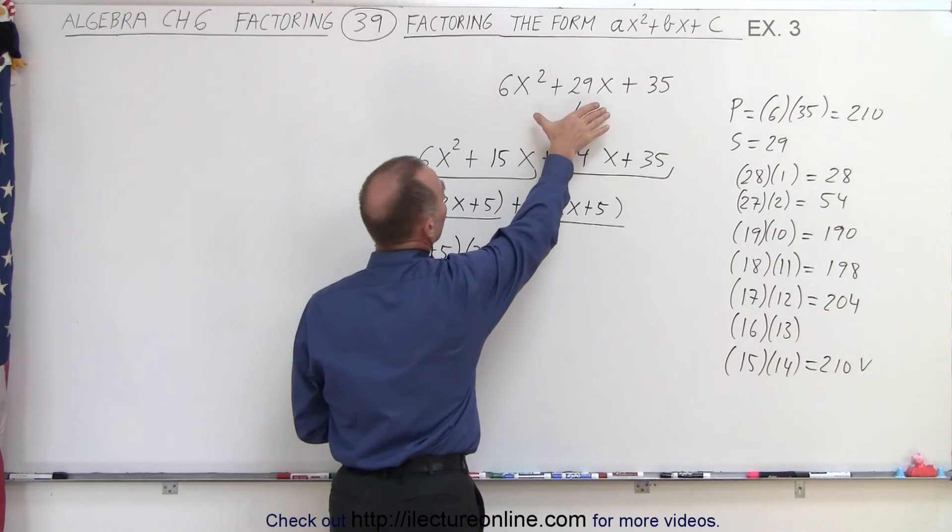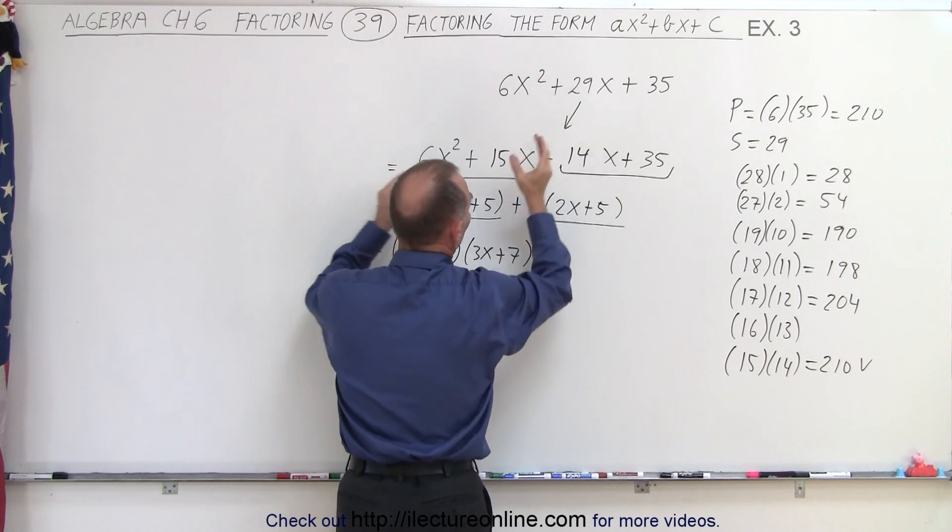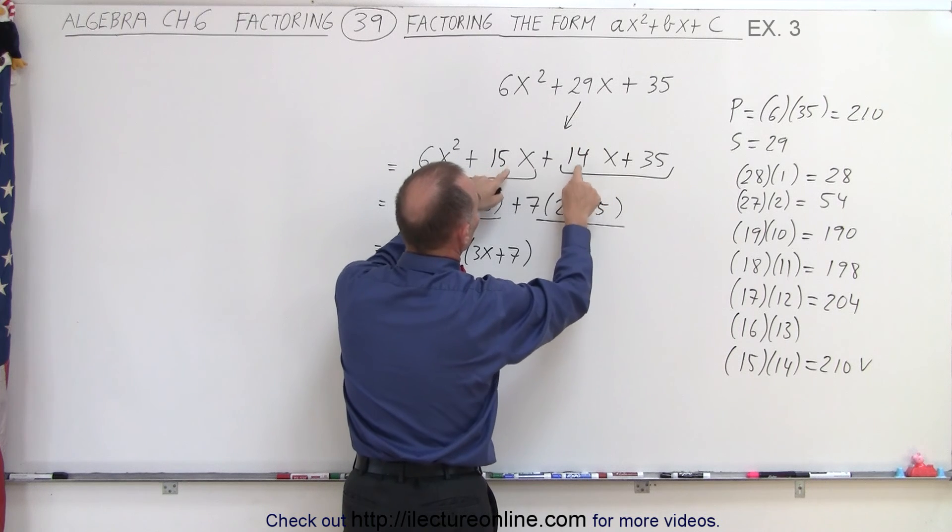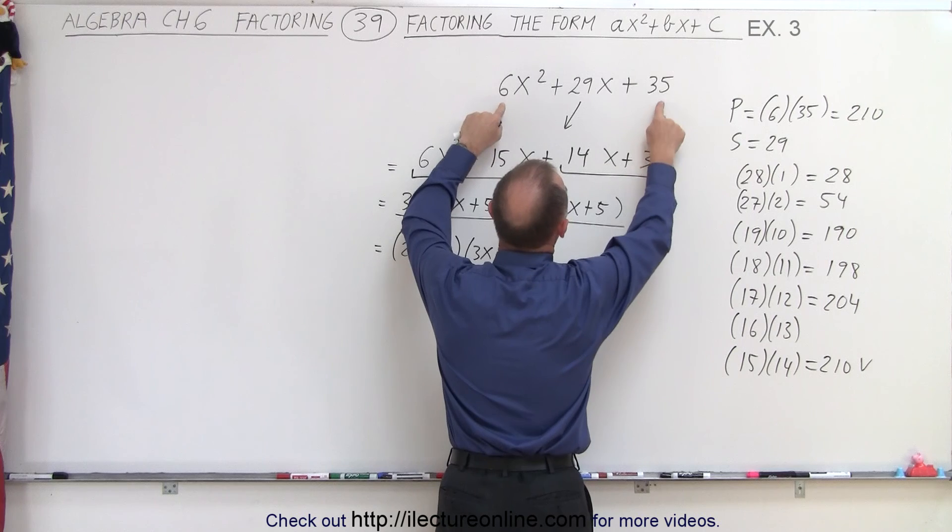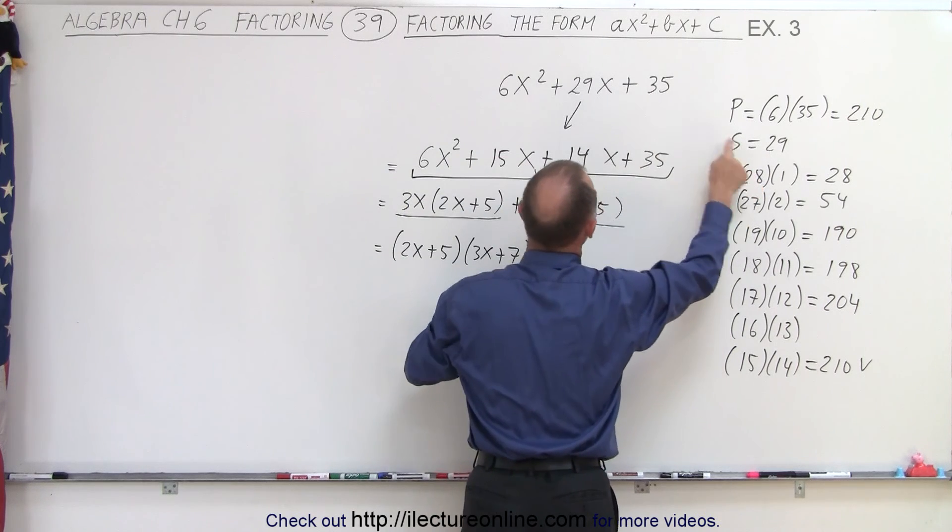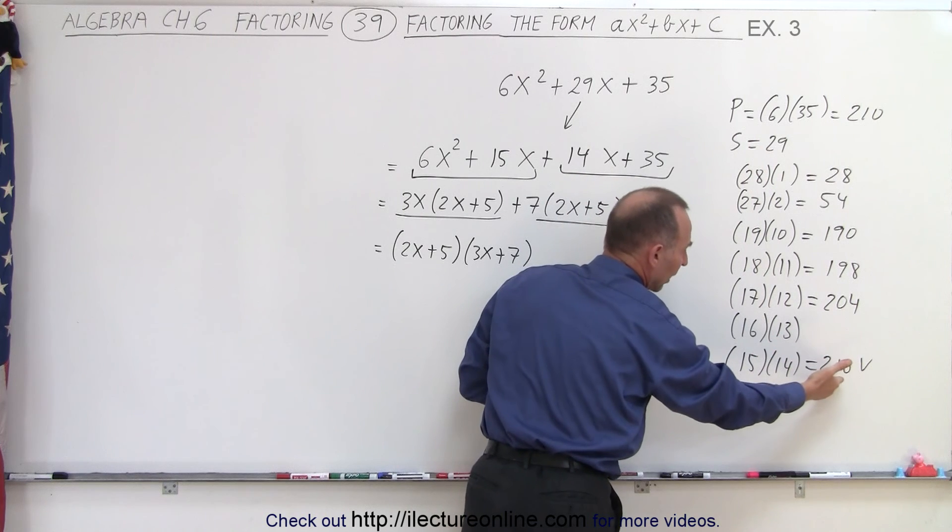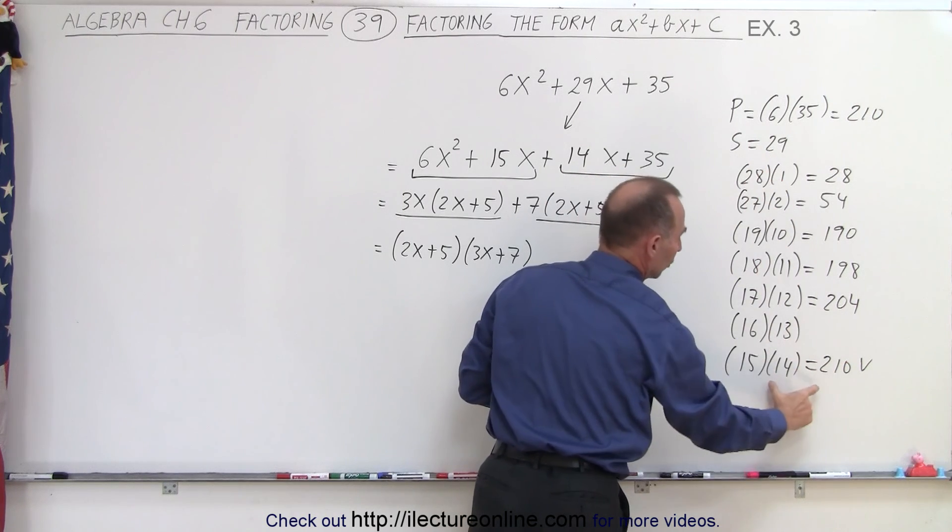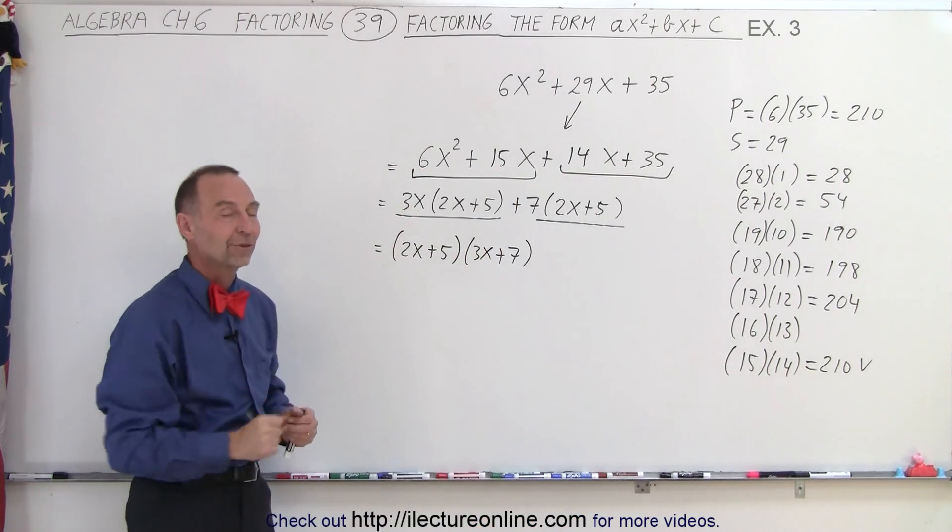It all comes down to rewriting the trinomial into a polynomial of four terms. The middle term is split into the sum of two middle terms. To find the numerical coefficients, the product must equal the product of these two numbers, and the sum must equal this number. Then we systematically find the correct combination whose sum is 29 and whose product is 210. That is how it's done.